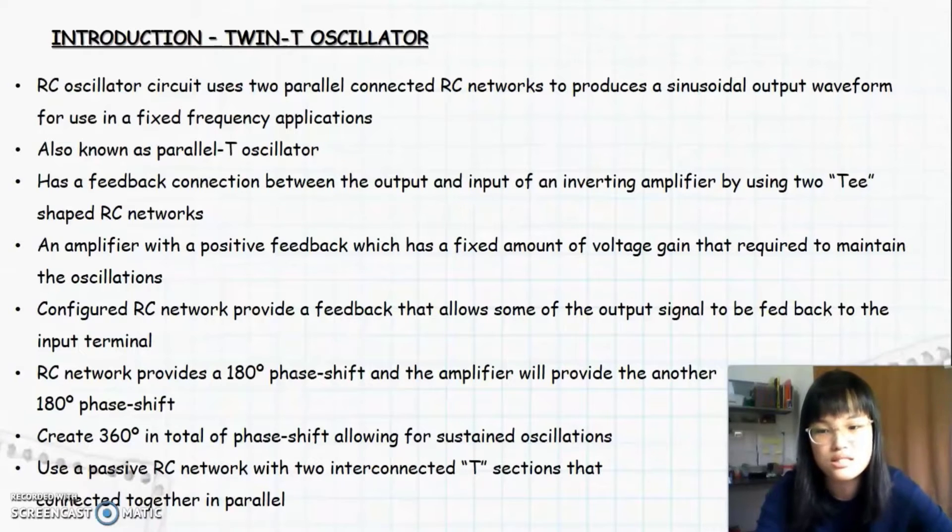The configured RC network in the twin-T oscillator provides feedback that allows some of the output signal to be fed back to the input terminal. The RC network provides a 180-degree phase shift and the amplifier will provide another 180-degree phase shift. Thus it will create 360 degrees in total of phase shift, allowing for sustained oscillations. The twin-T oscillator also uses a passive RC network with two interconnected T sections that are connected together in parallel.